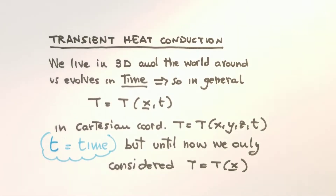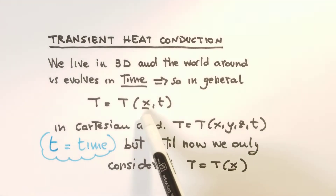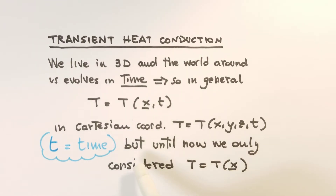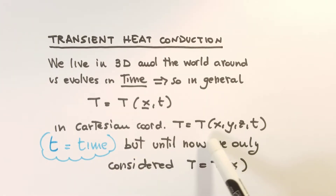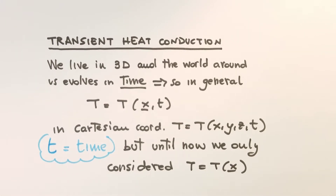Welcome to a new video on heat transfer. Today we are studying transient heat conduction. We live in a three-dimensional world and the world around us evolves in time, so in general the temperature field depends on space — indicated here with a vector x — and time. In Cartesian coordinates we have a temperature that depends on x, y, z, and also on time. Up to now we have only considered cases where the temperature depends only on space. In this lesson we want to start talking about temperature that instead depends on time as well.